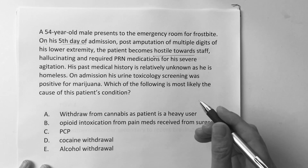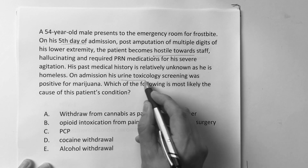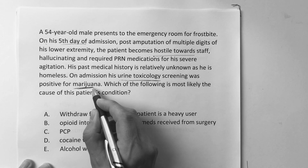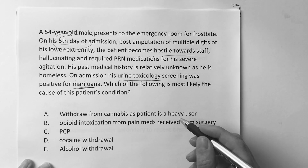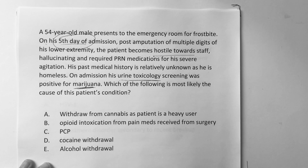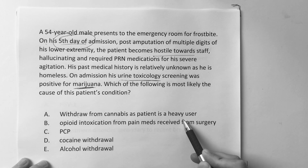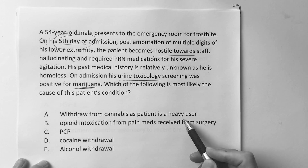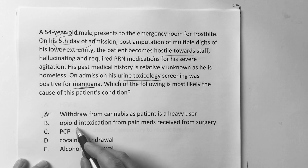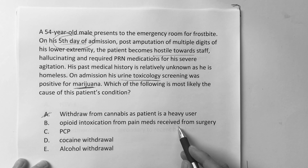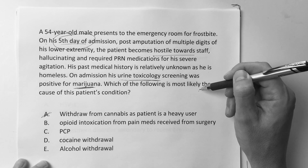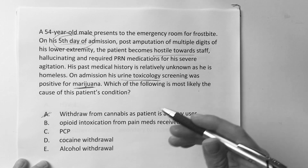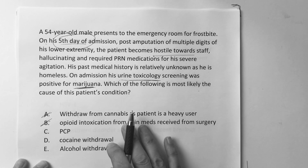Which of the following is the most likely cause of the patient's condition? We don't have much history — we know his urine toxicology screening was positive for marijuana, but nothing else. On day five he starts going bonkers. Withdrawal from cannabis, even as a heavy user, may be uncomfortable but it's not going to cause hostility. Opioid intoxication from pain meds would be more of a sedating effect, so I'm not keen on that one.